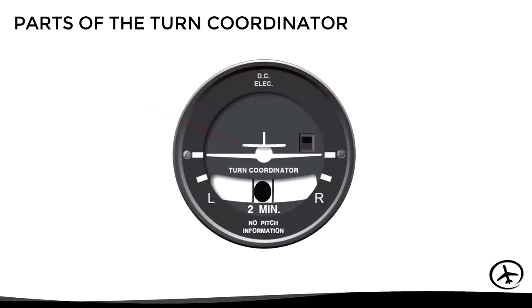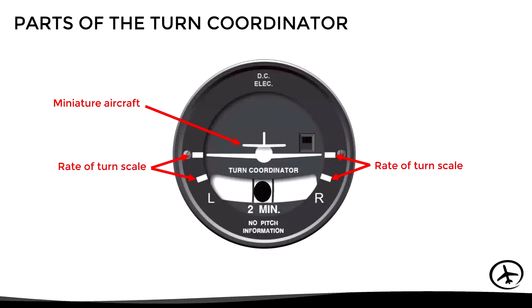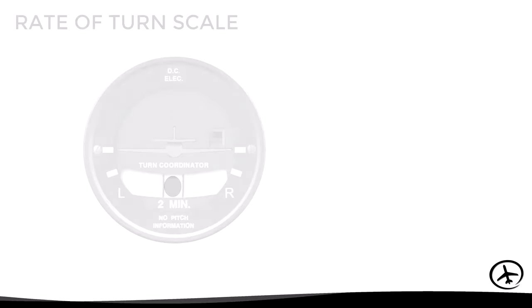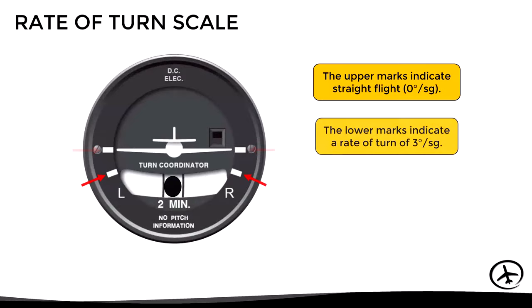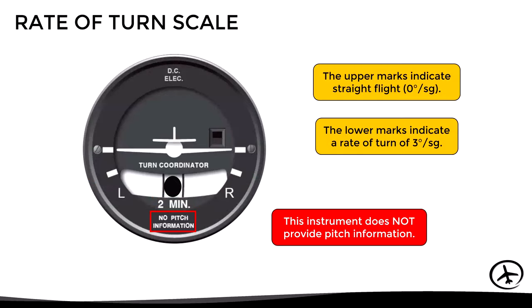Looking at the parts of the turn coordinator: the main difference from the turn and slip indicator is that instead of a needle, it has a miniature aircraft, and the rate of turn markings are located at the sides. At the bottom, as before, there is the inclinometer. The upper marks represent zero degrees per second (straight flight), while the lower marks represent three degrees per second — a 360-degree turn in two minutes. Note that although it has a miniature aircraft, it does not provide pitch information, as stated on the instrument dial.